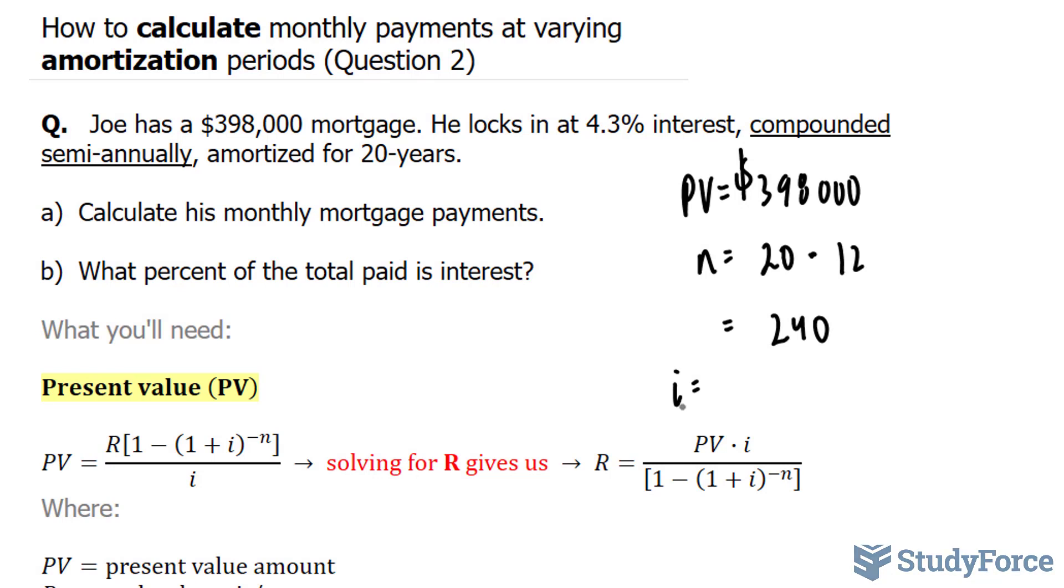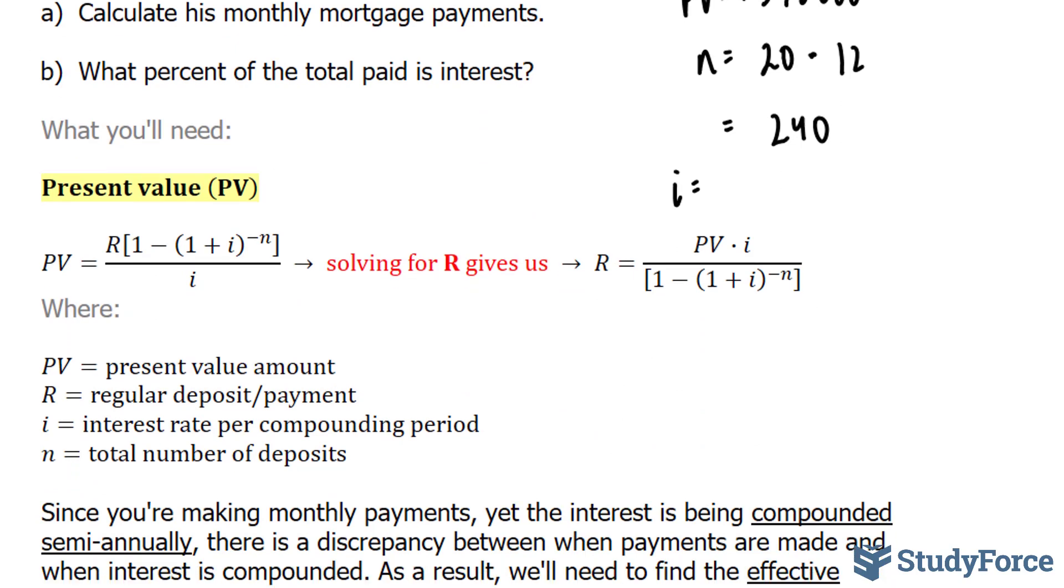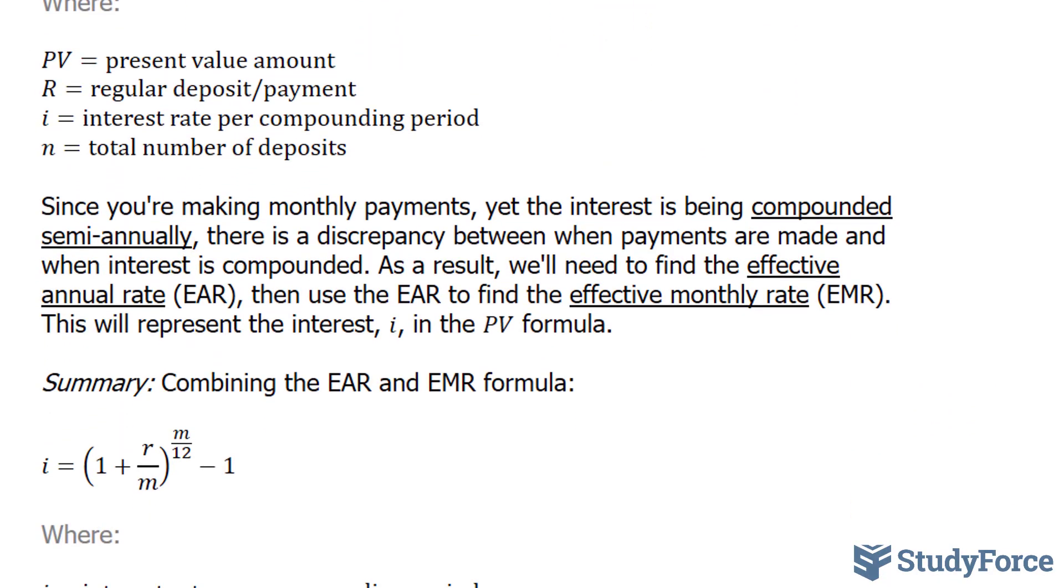Normally, when we use the present value formula, the compounding period is equal to when the payments are being made regularly. Not in this case. So to calculate i, we need to use a special formula.